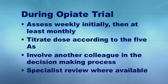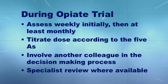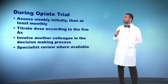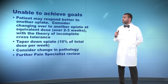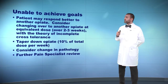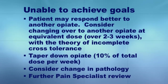During the trial of opioids in these patients, you have to assess weekly initially, and then at least monthly. Titrate the dose according to the 5As, and involve another colleague in the decision-making process and a specialist review if available. If you are unable to achieve the goal, the patient may respond better to another opioid — consider opioid rotation at equivalent doses over two to three weeks.